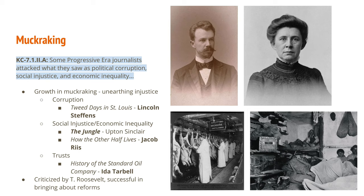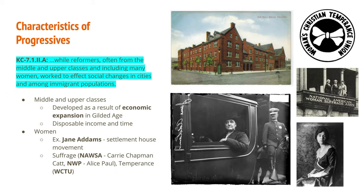Teddy Roosevelt actually knew some of these muckrakers like Jacob Riis. Whenever Riis had published 'How the Other Half Lives' and Roosevelt was working in New York politics, he went around the city and saw what Riis had written about in his book. Reformers, often from the middle and upper class and including many women, worked to affect social changes in cities and among immigrant populations. The main three characteristics of progressives were: upper and middle class, and women. The upper and middle class were getting involved in injustices they saw in the world because they now had more disposable income and time.